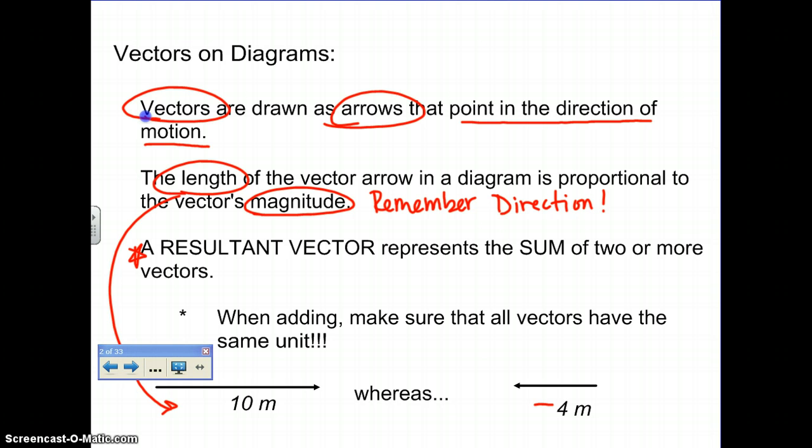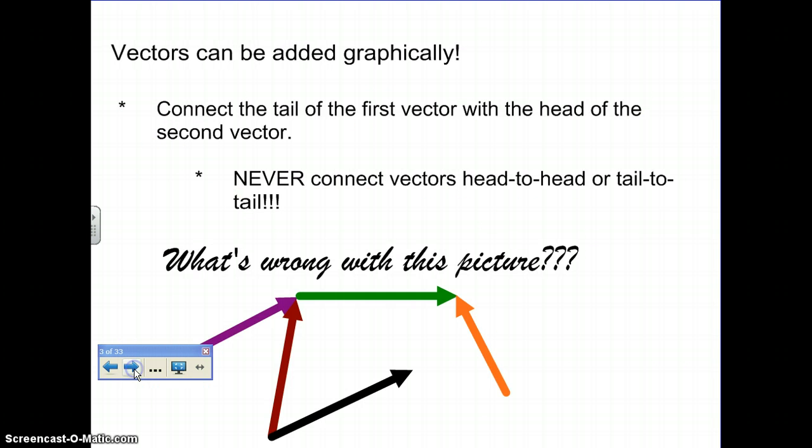Back up here to a resultant. For a resultant, you're looking at the sum of two or more vectors. So the result of adding these things together is called your resultant vector. Very important here. When adding, make sure that all vectors have the same unit. So you don't want one that's in kilometers plus one that's in meters plus one that's in decimeters. You need to make sure that they are all in the same unit in order to get the resultant vector. Like what is the result of adding these guys together?